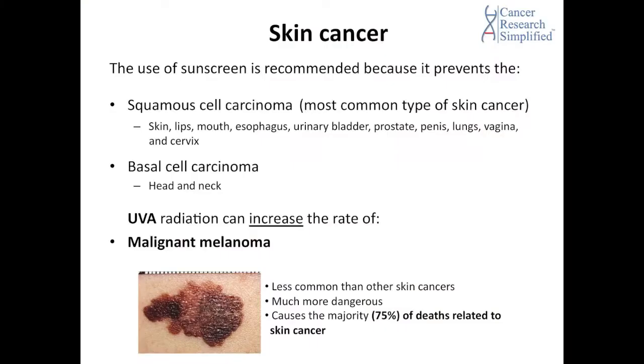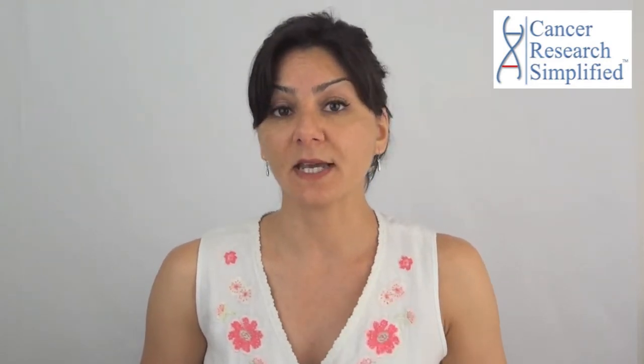Another skin cancer type is basal cell carcinoma, which can occur in the head and neck. The other type — and I know you've heard of this — is malignant melanoma. I've also discussed malignant melanoma in detail in episode number one, called Cancer Types. Malignant melanoma is less common than squamous cell carcinoma and basal cell carcinoma, but is the most deadly type of skin cancer. In fact, 75% of all deaths related to skin cancer are caused by malignant melanoma.